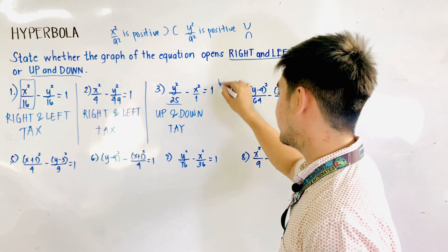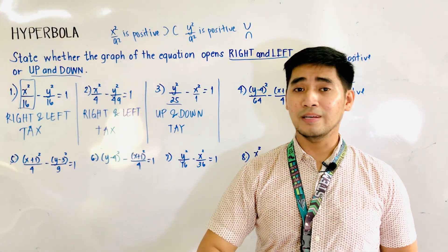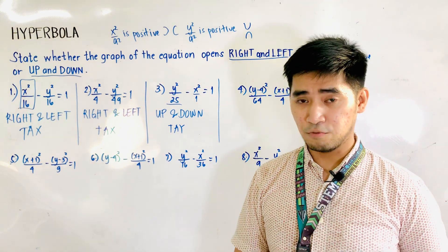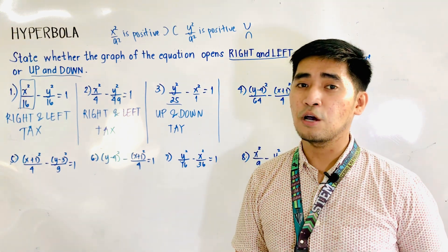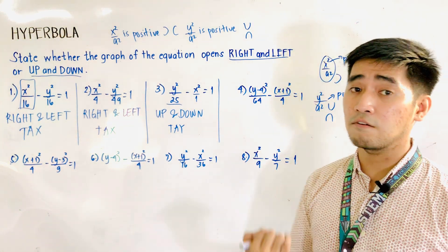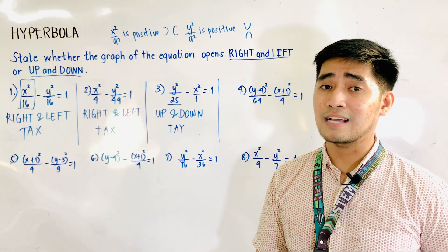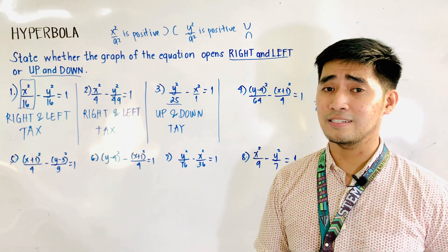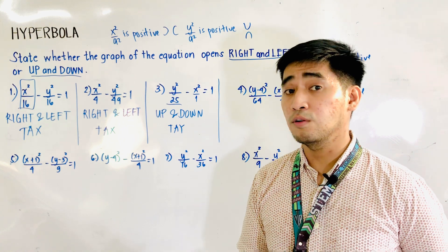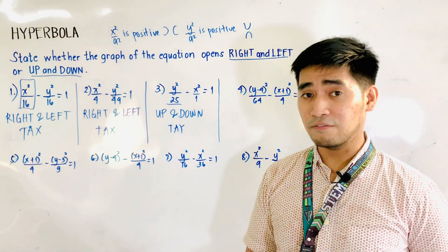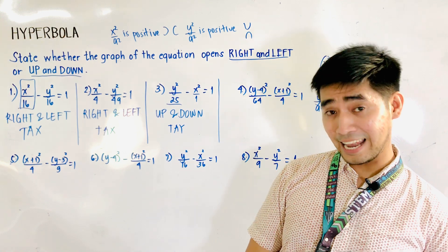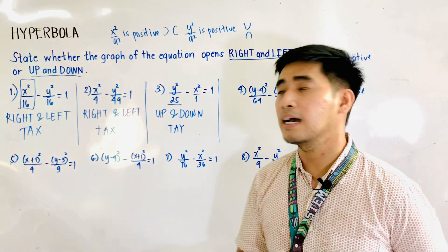Just identify the positive term, and that positive term will tell you the transverse axis. When you know the transverse axis, you'll be able to identify the nature of the graph of the hyperbola. There are two transverse axes: transverse axis x or transverse axis y. If it is transverse axis x, it will open right and left. If it is transverse axis y — transverse axis vertical — from the word vertical, it will open up and down.